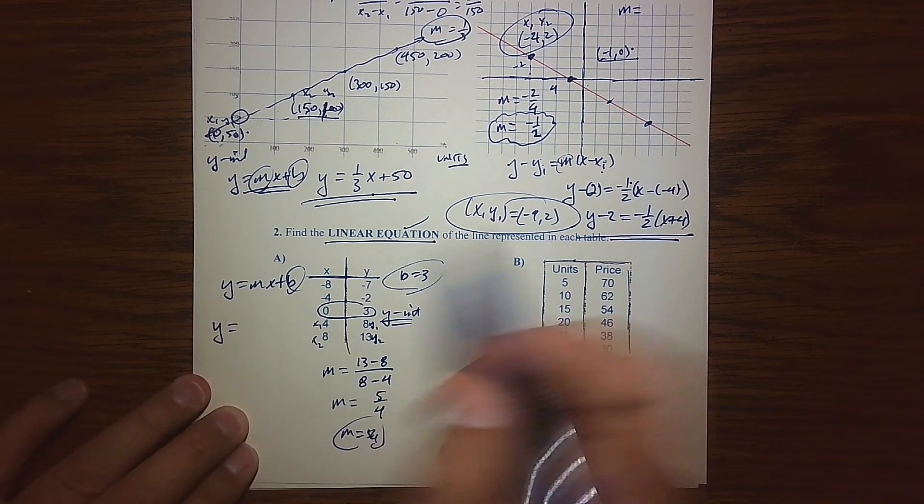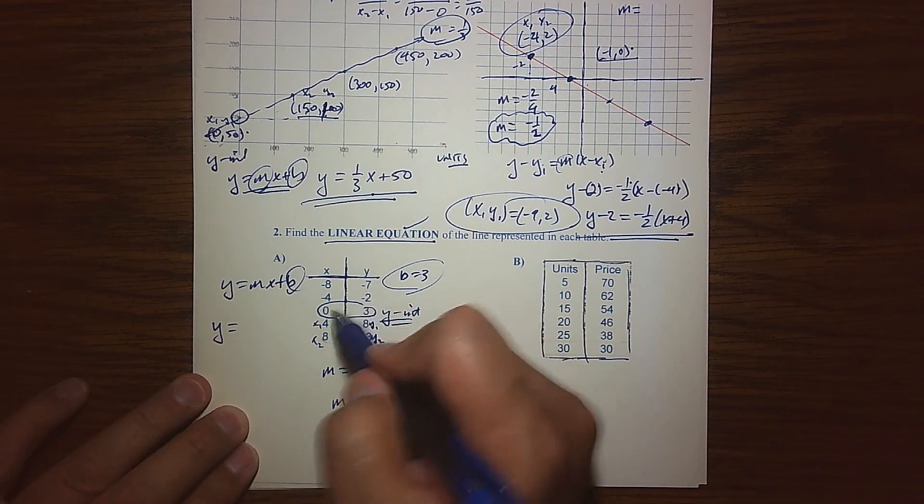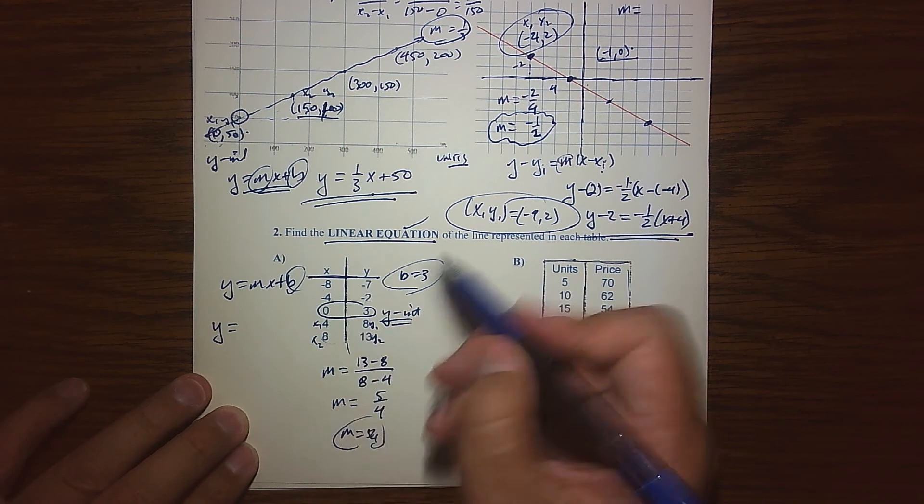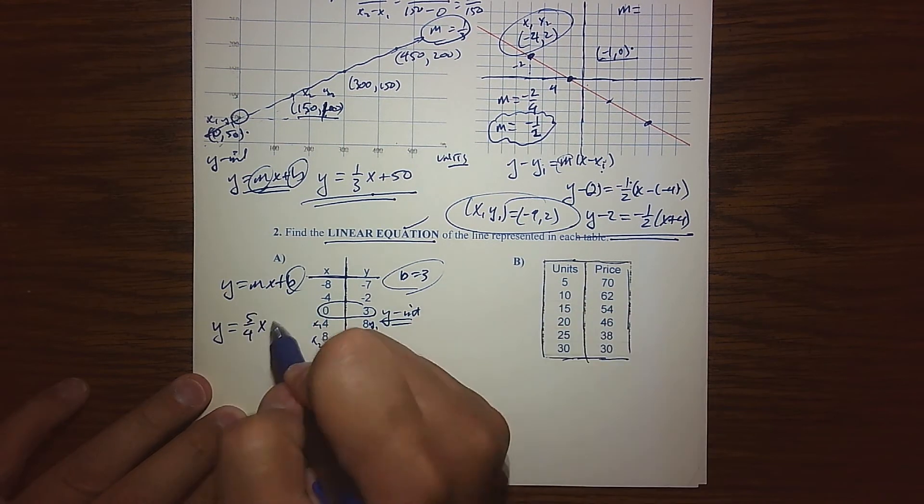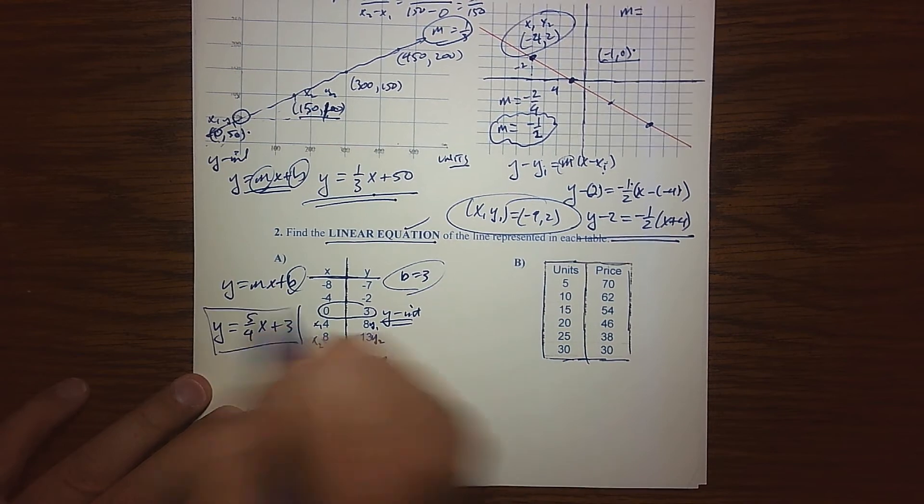So what's the line that fits this? What equation are these solutions to? y equals 5 fourths x plus 3. And there you go.